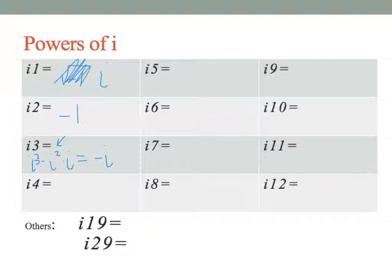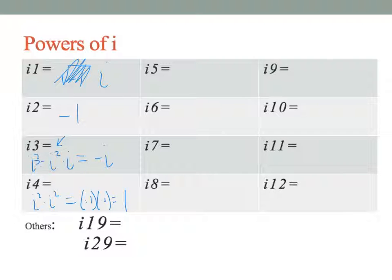i to the first is i, i squared is negative 1, i to the third is negative i. i to the fourth can be defined as i squared times i squared — each of those is negative 1 — so i to the fourth is positive 1. Then i to the fifth is i to the fourth times i, which is 1 times i, or just i.